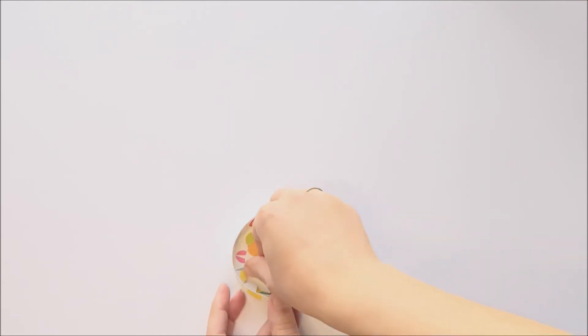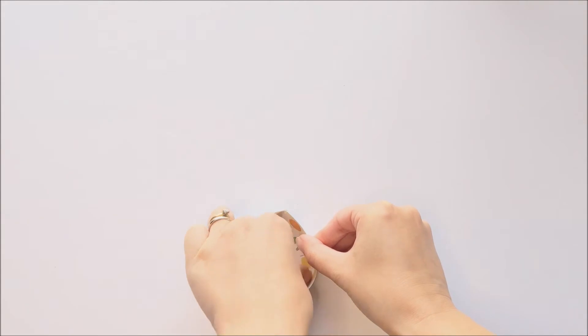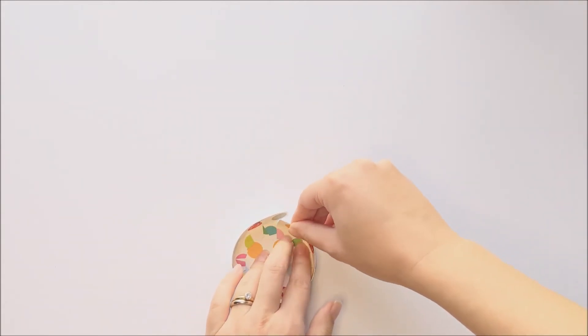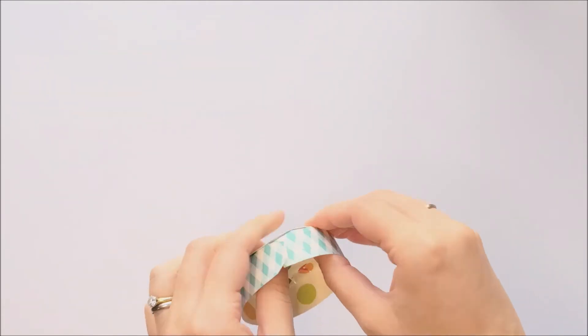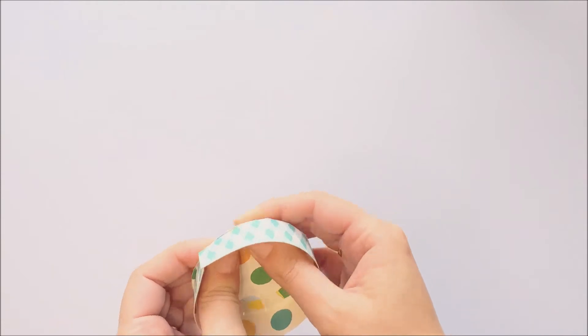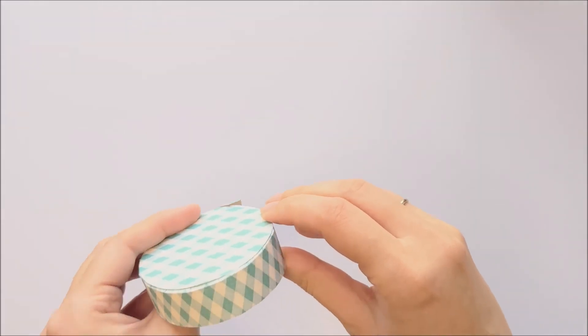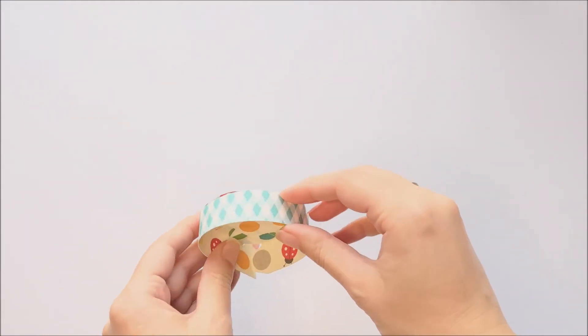I'm just going around one by one and pressing down each of those tabs, making sure that the outside edge of the lid piece is matching up with the outer edge of that circle. So if you can see, the side of the lid is matching up with the edge of those circles.